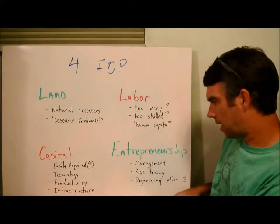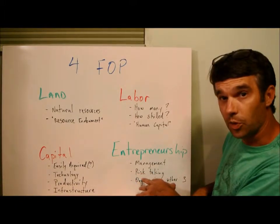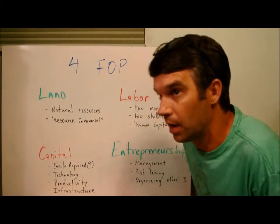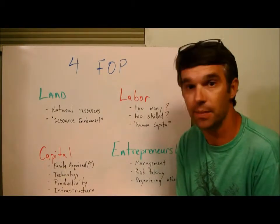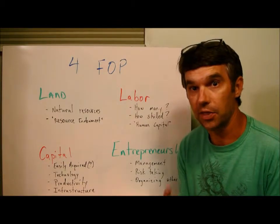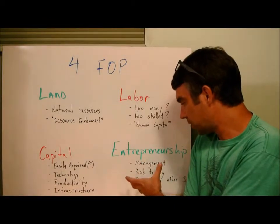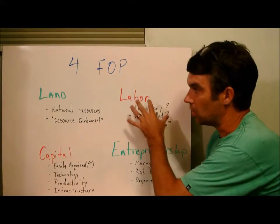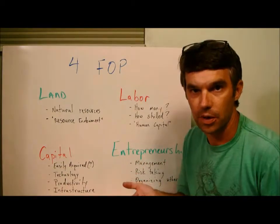For entrepreneurship, the other thing to point out is that typically they are the ones taking the risk. In the last few years, there have been a lot of people protesting the amount of money that entrepreneurs, CEOs, or whomever make. The reason they justify it — and I'm not saying I agree with it — is that they're the ones who've taken the risk. Essentially what entrepreneurship does is organize the other three: how can we use land, labor, and capital together the best to produce the most?